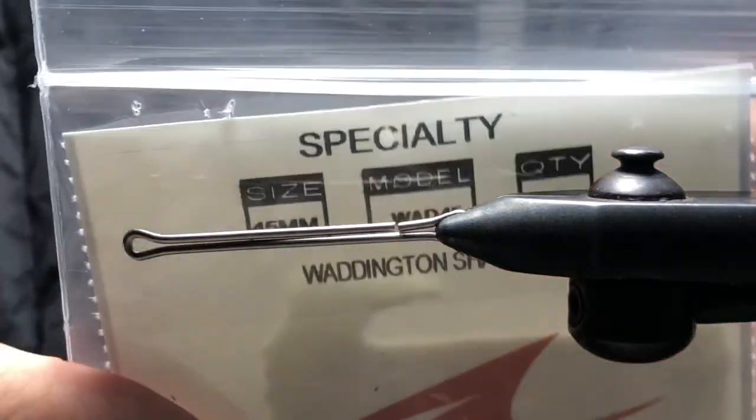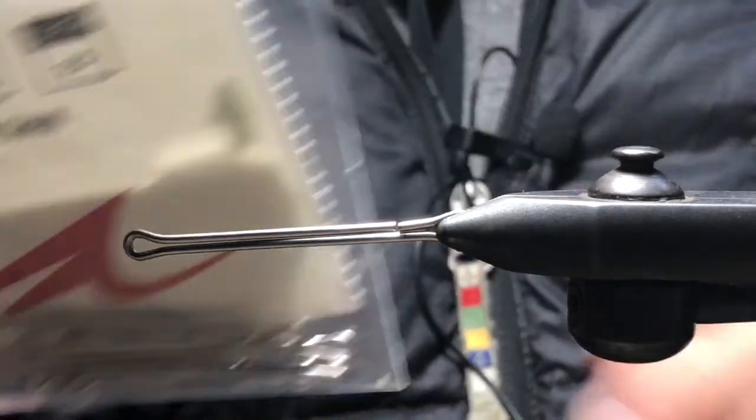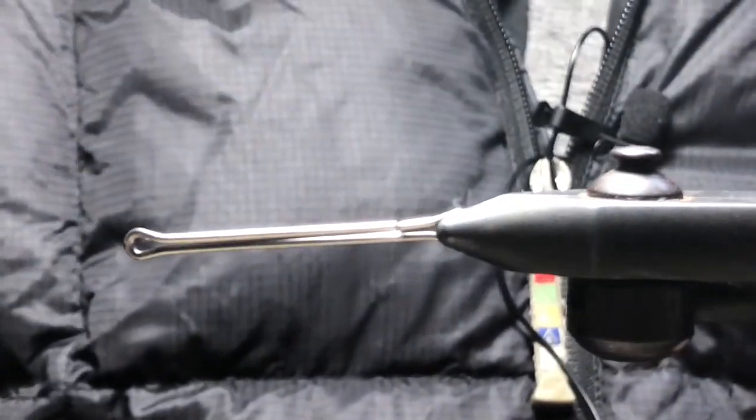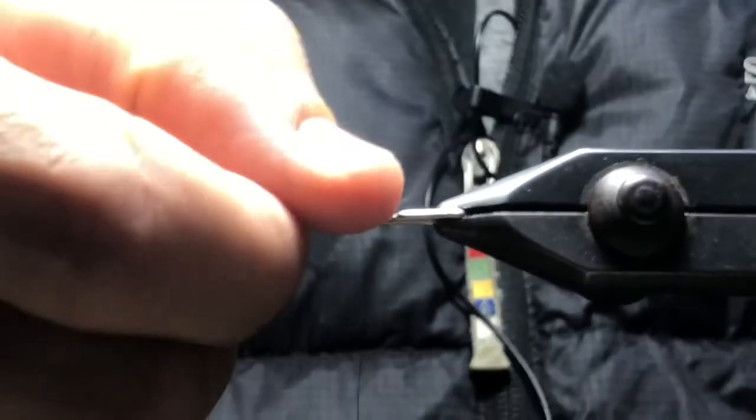This is a pretty typical way to do it. We're just starting out with a 45 millimeter Waddington shank, and as you can see getting started here, it's got this little piece here that's detached.